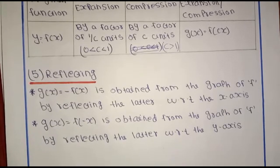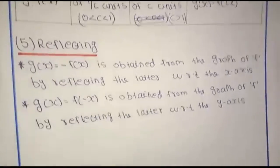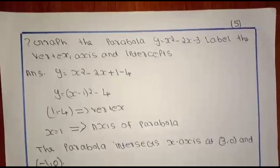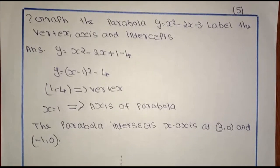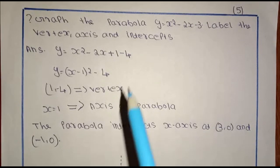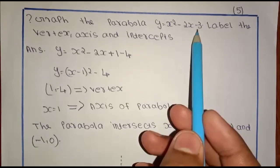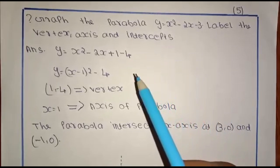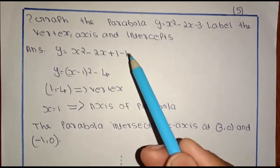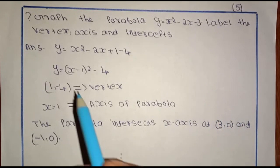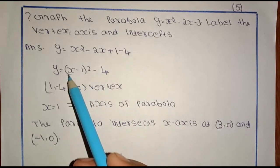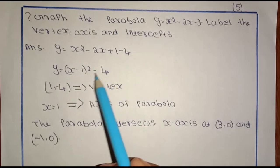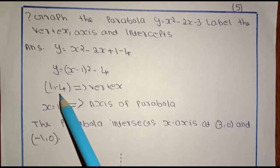Here we have the graph of y equals x squared minus 2x minus 3. We need to label the vertex, axis, and intercepts. Completing the square: y equals x minus 1 whole square minus 4. The vertex is at (1, -4).